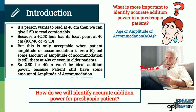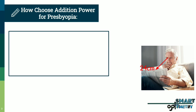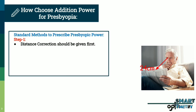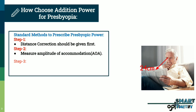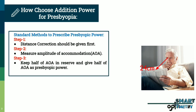The question is: how do we identify accurate addition power for a presbyopic patient? Standard method to prescribe presbyopic power. Step 1: distance correction should be given first. Step 2: measure amplitude of accommodation. Step 3: keep half of amplitude of accommodation in reserve and give half of amplitude of accommodation as the presbyopic addition power.